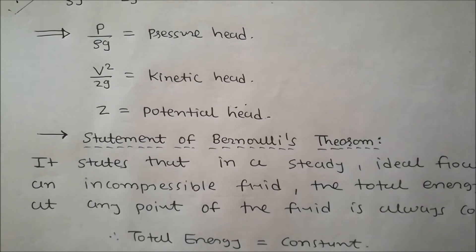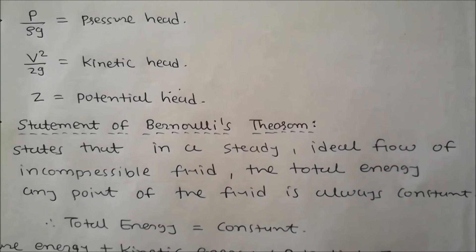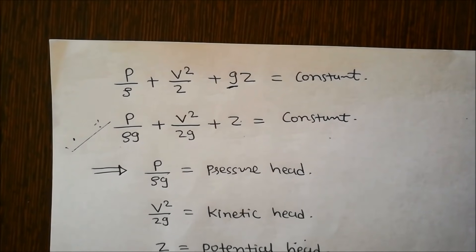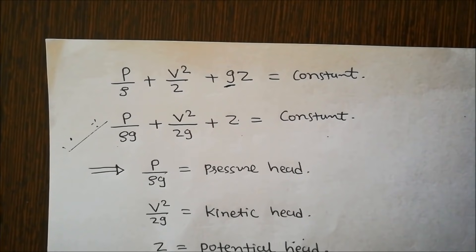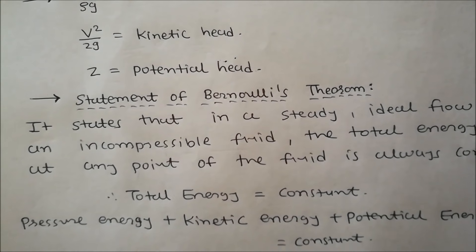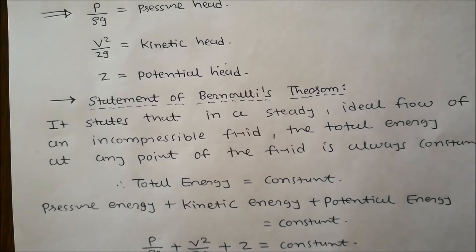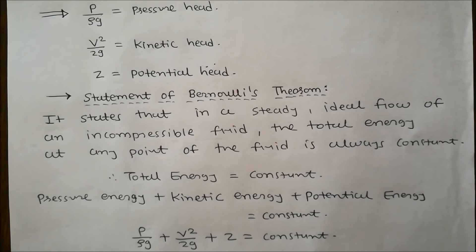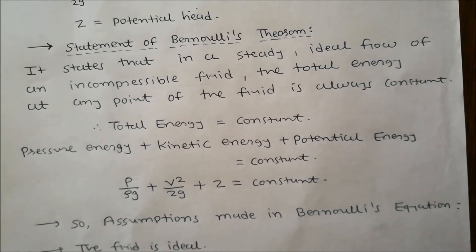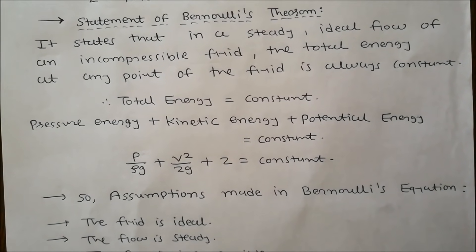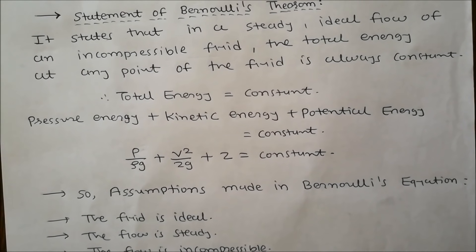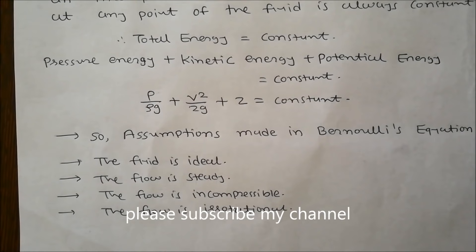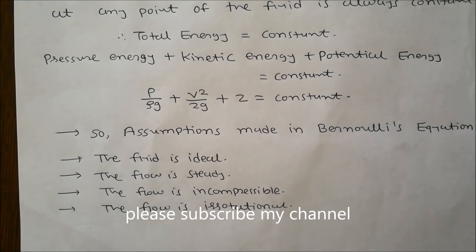The statement of Bernoulli's theorem: in a steady, ideal, incompressible fluid flow, the total energy — the sum of pressure energy, kinetic energy, and potential energy — at any point of the fluid is always constant: P/(ρg) + V²/(2g) + z = constant. The assumptions used to derive Bernoulli's equation are: the fluid is ideal, the flow is steady, the flow is incompressible, and the flow is irrotational.